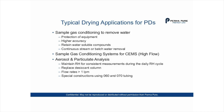PD dryers are used in our own sample gas conditioning systems for continuous emissions monitoring, where high flow is required — typically 5 to 20 liters per minute. They're also used in aerosol particle analysis to maintain relative humidity for consistent measurements during the daily RH cycle, and to replace desiccant columns, typically at flow rates over 1 liter per minute. We also recommend our special constructions using 0.060 and 0.070 tubing to minimize particle losses.